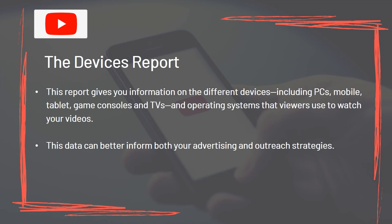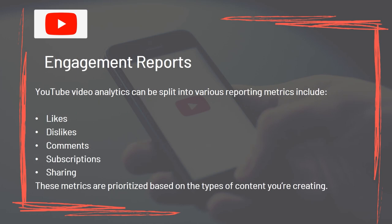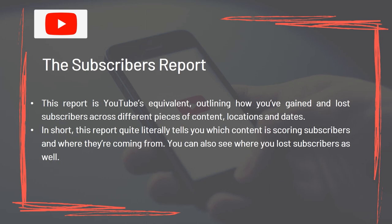The Devices Report gives you information on the different devices – including PCs, mobile, tablet, game consoles and TVs – and operating systems that viewers use to watch your videos. This data can better inform both your advertising and outreach strategies. Engagement Reports: YouTube video analytics can be split into various reporting metrics including Likes, Dislikes, Comments, Subscriptions, and Sharing. The Subscribers Report outlines how you have gained and lost subscribers across different pieces of content, locations, and dates – it tells you which content is scoring subscribers and where they are coming from.